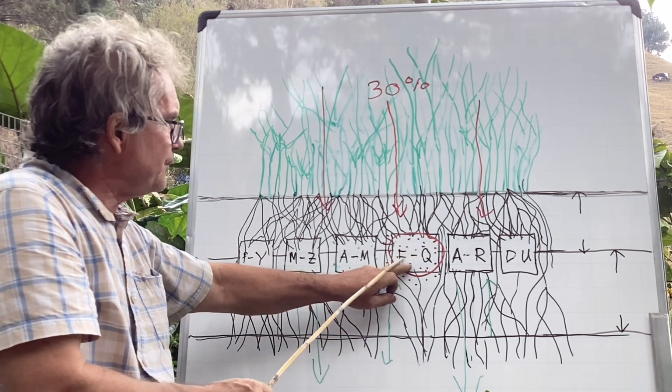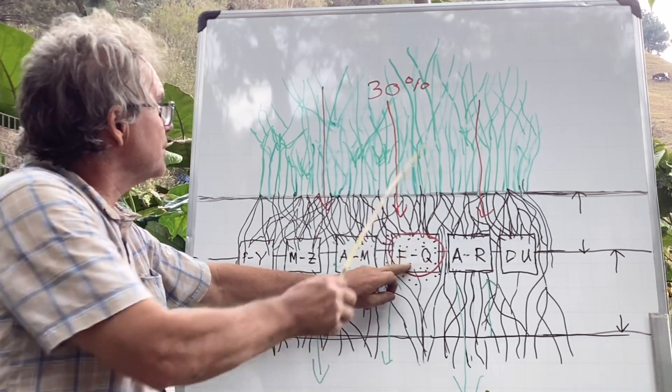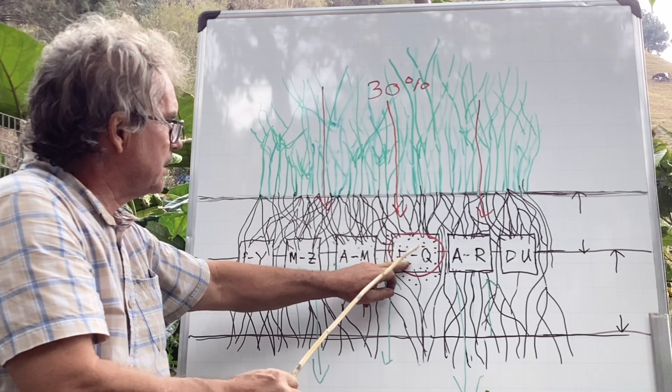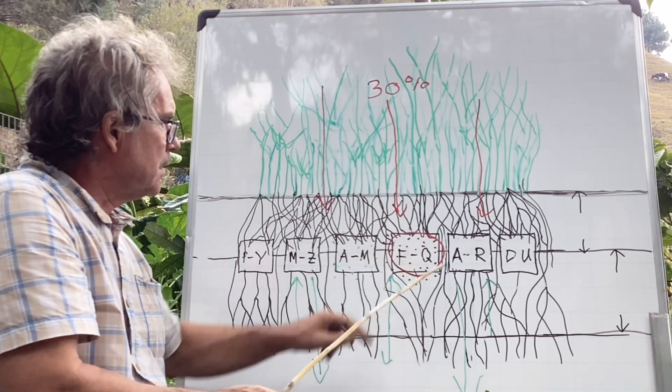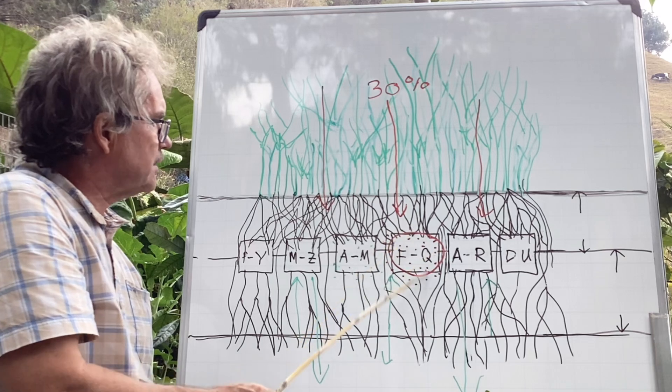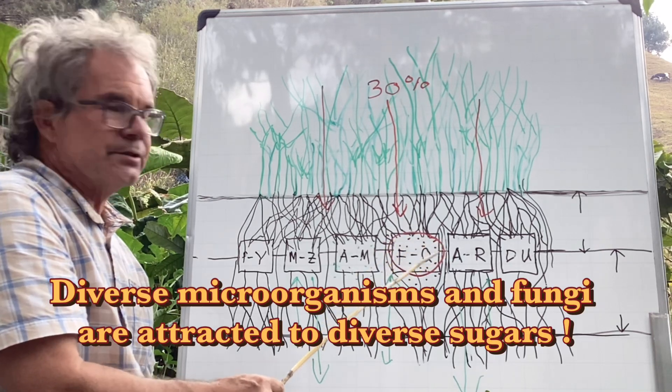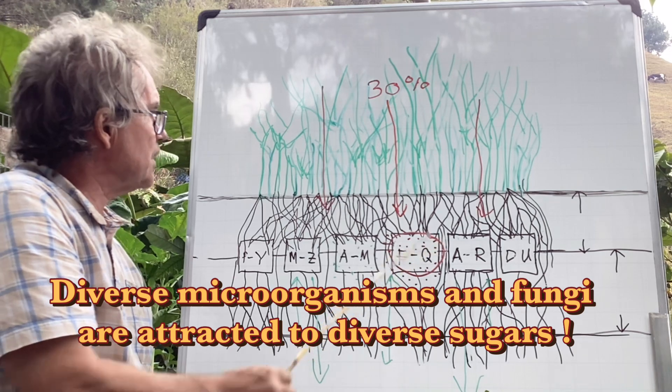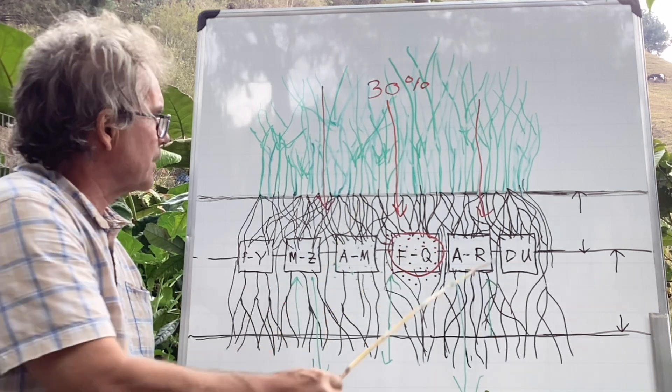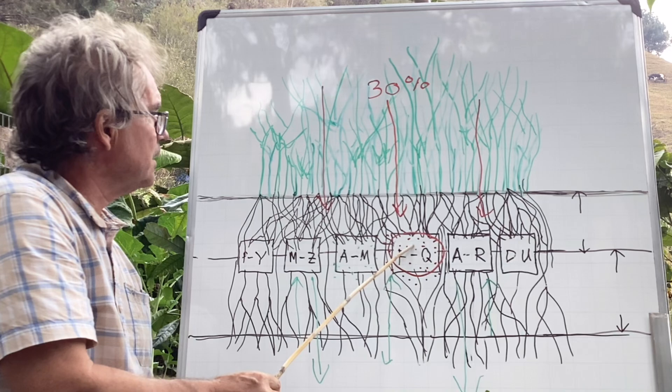These plants up here that have sent this really different sugar and energy down into the ground will attract very different microorganisms. And these different microorganisms produce different food for this area. So this diversity is not only represented above.